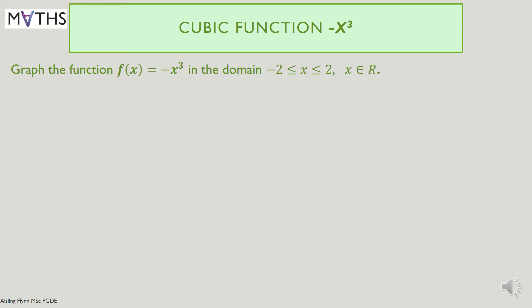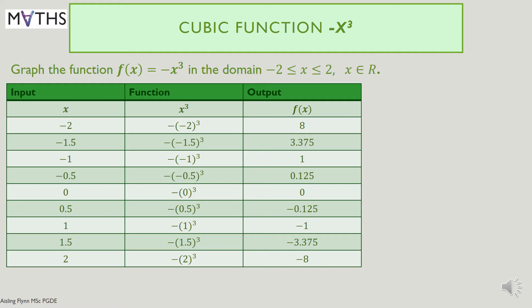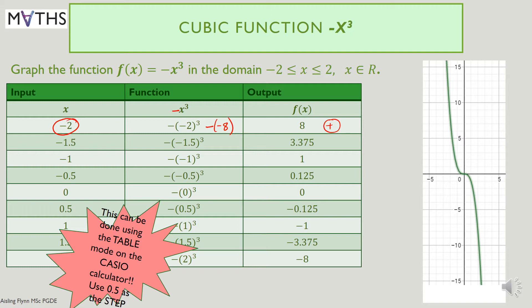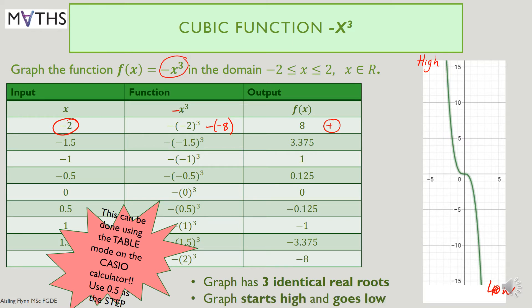Now let's look at an alternative: the minus x cubed function, f(x) = −x³. Looking at the table, when x is minus 2, the function is −(−2)³ = −(−8) = +8. Use your calculator to help with this. This shows a graph that starts high and finishes low. When you have a negative x cubed term, it will start high and finish low. This graph also has three identical real roots.